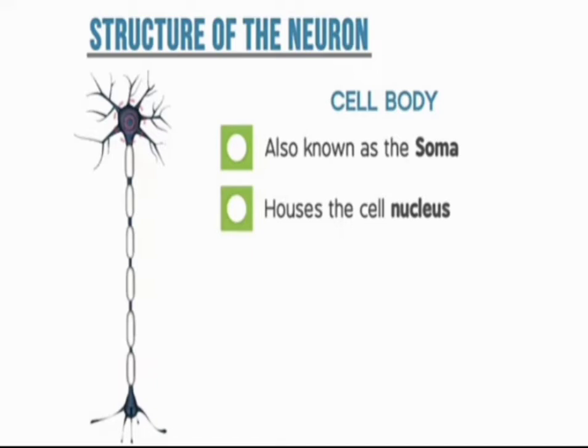The cell body — also called soma or pericaryon — contains the nucleus and standard organelles and serves as the metabolic center of the neuron.